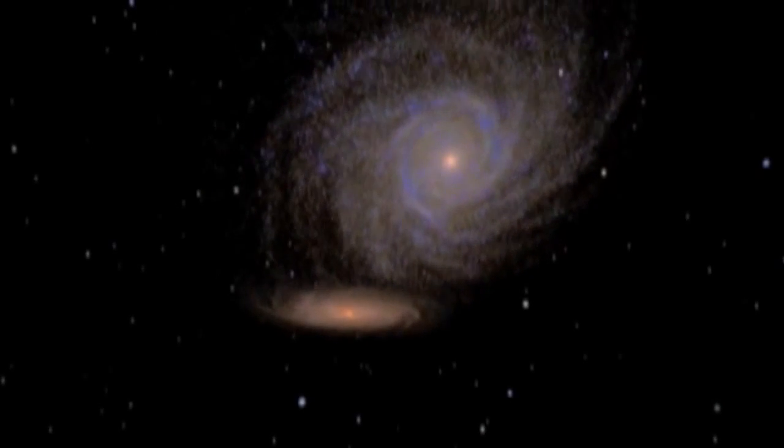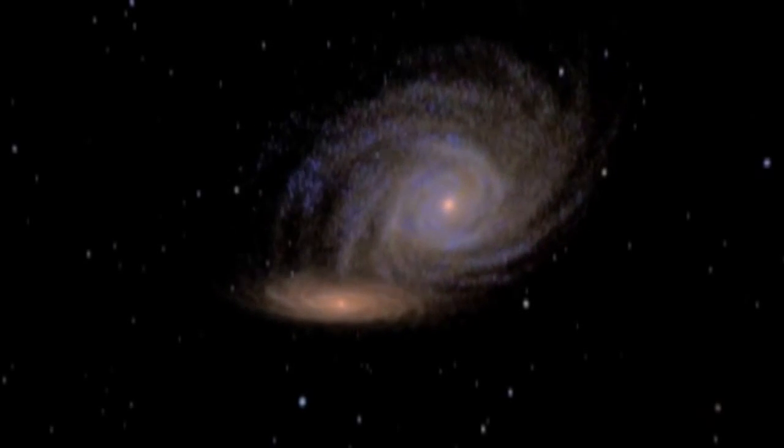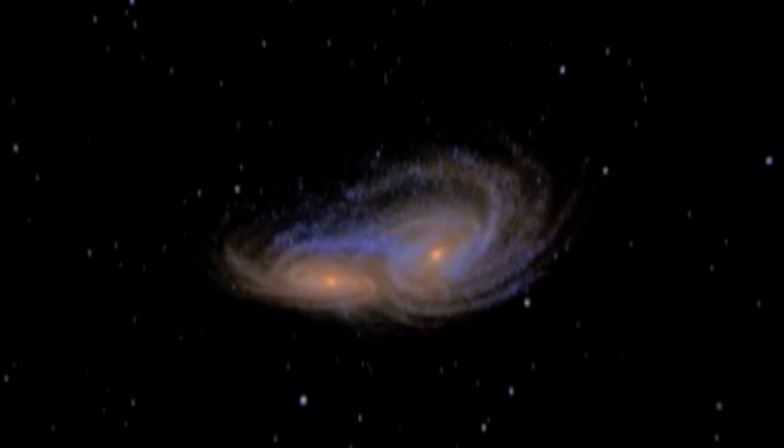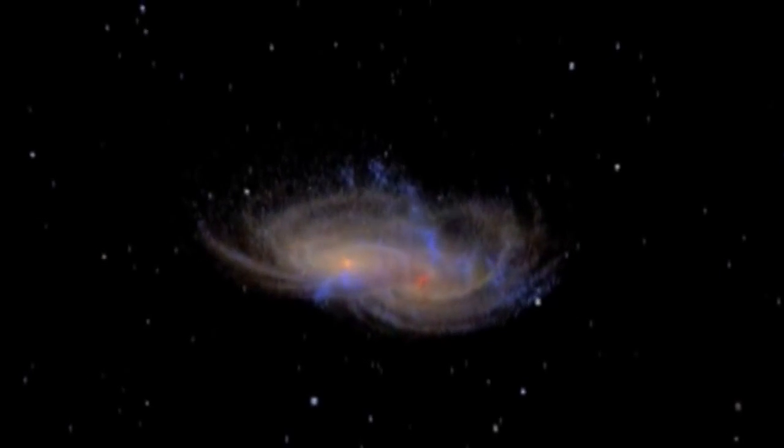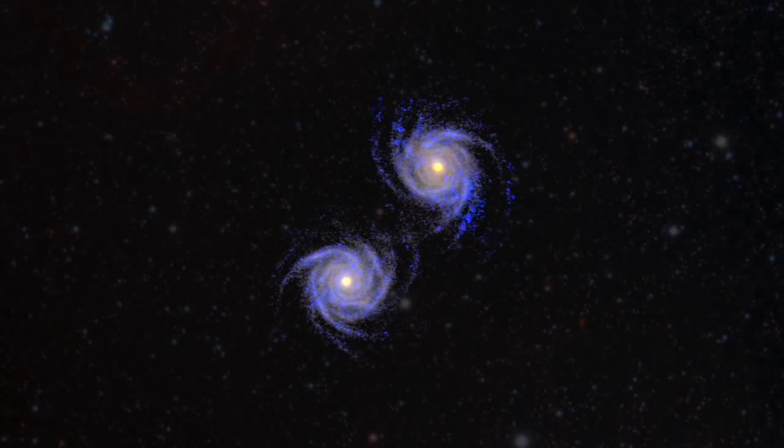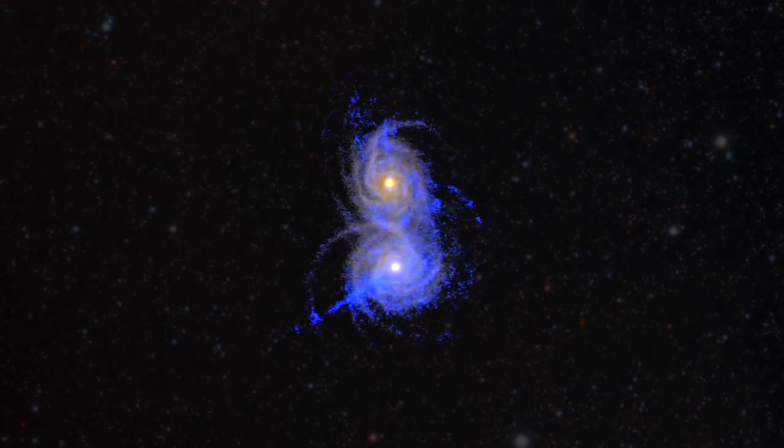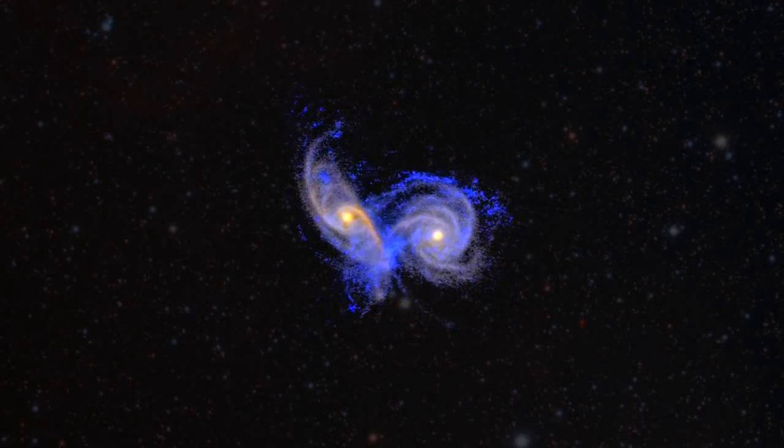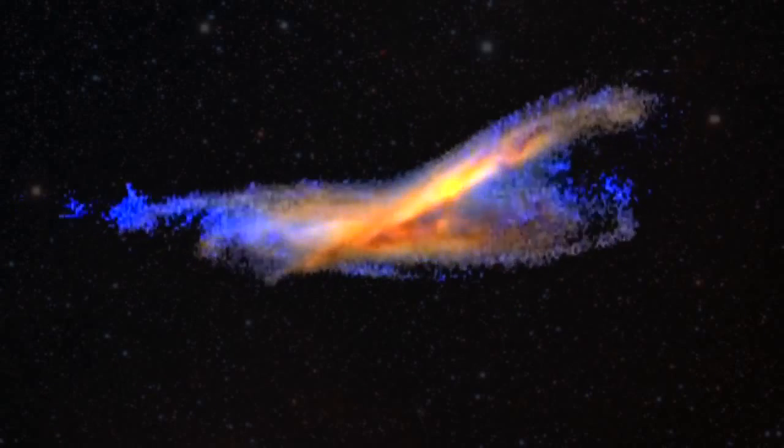They've caught each other's eyes, so to speak. We see them start to slow down. There's a braking. You start to see what looks like the unraveling of one arm from one galaxy approaching the other. And you'll also see small flashes of blue along each of the galaxies. This is the first signs of the formation of new stars.